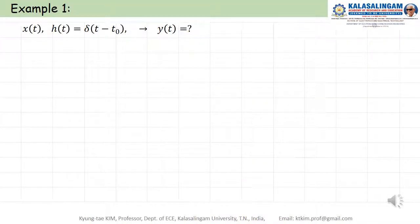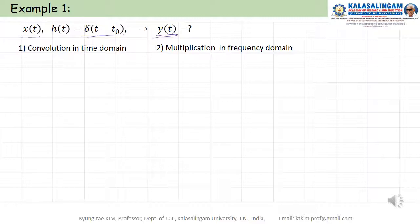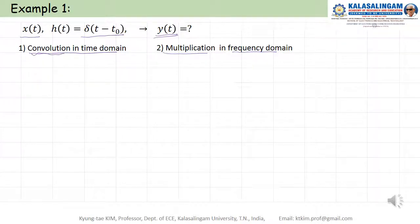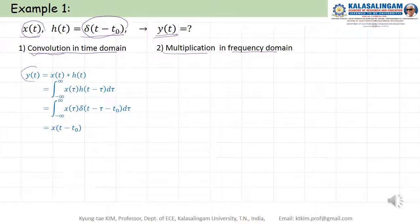Let me take some examples. First, x(t) and h(t) equal δ(t - t₀), then find y(t). There are two ways to get y(t): one is convolution in the time domain, and another one is multiplication in the frequency domain. First, convolution: y(t) equals x(t) convolution h(t), by formula like this.